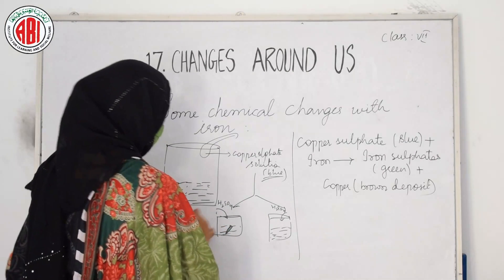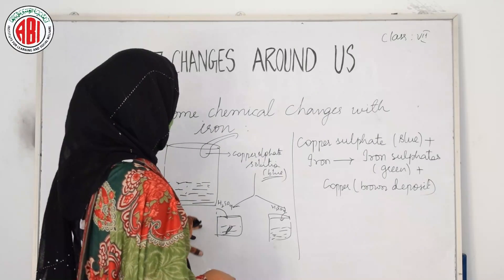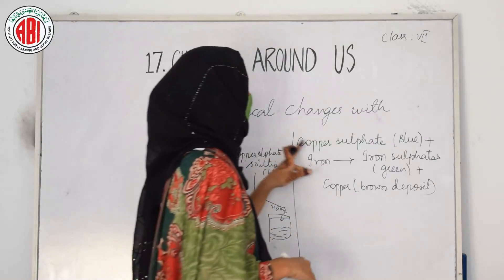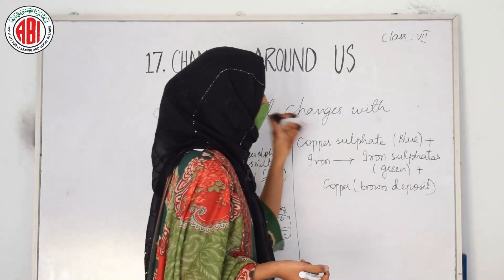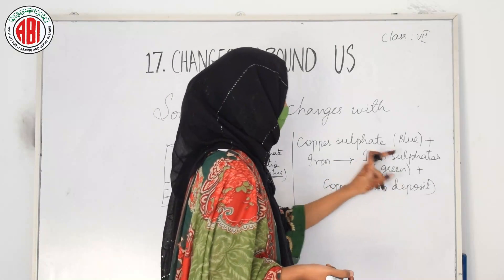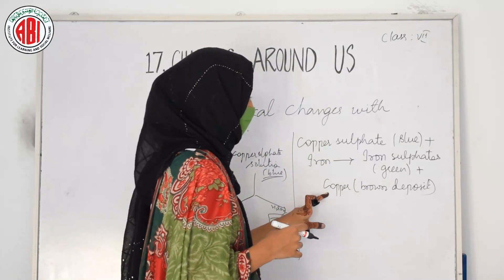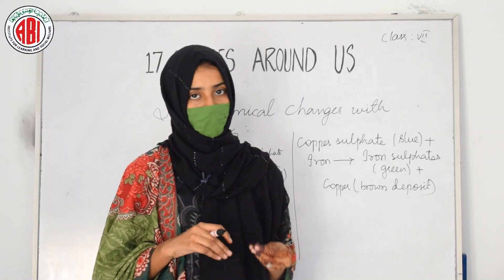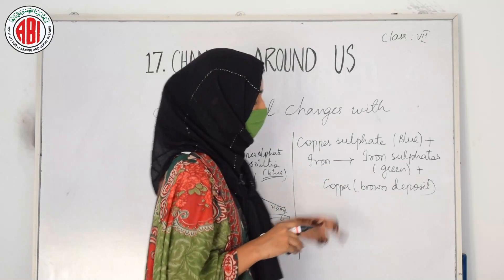The iron reacts with the copper sulfate and results in the formation of a green color substance called iron sulfate, and brown color deposits appear on the iron nail, which is copper. So copper sulfate and iron react together to form iron sulfate and copper. The blue copper sulfate solution turns green, and copper deposits on the nail — confirming this is a chemical change with new products formed.